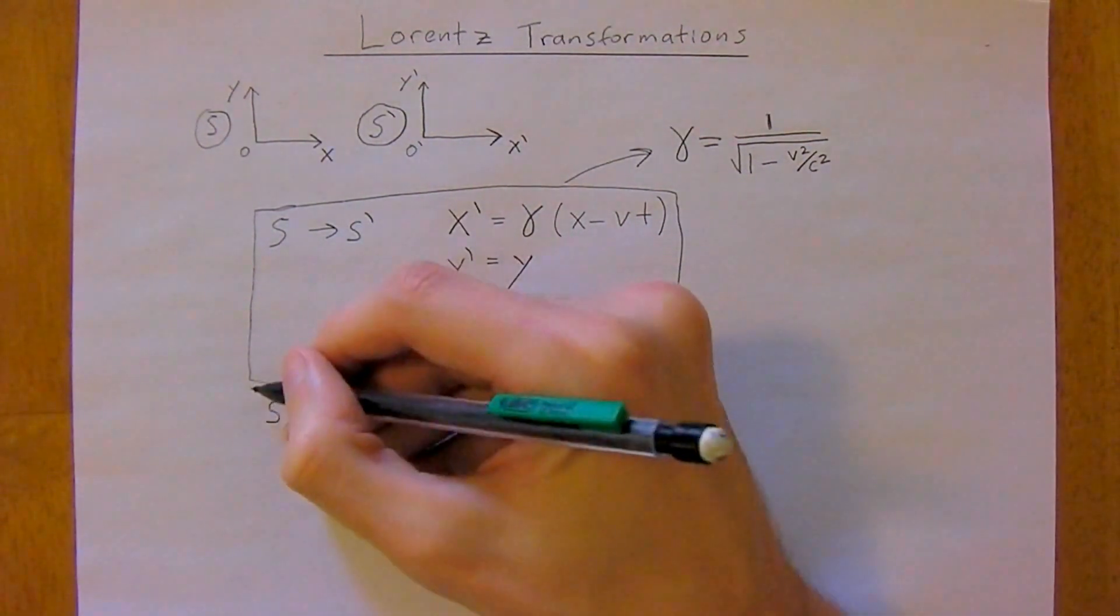And T is equal to gamma times T not plus V X not divided by C squared. It's important to notice that with the time here, the signs flip. We're transforming to the T not frame, so X is going to go to X not, T to T not. In this case X to X not and T to T not, but in the case of X not there's still going to be a negative here.